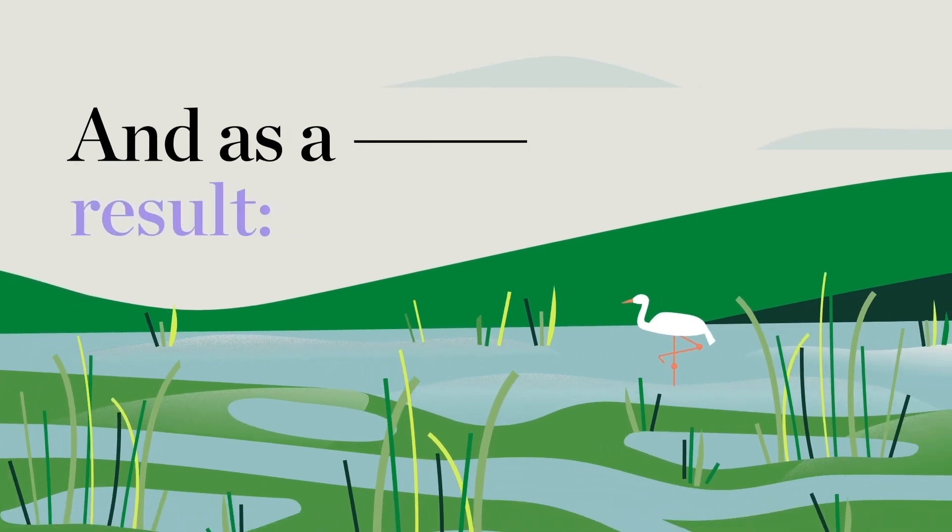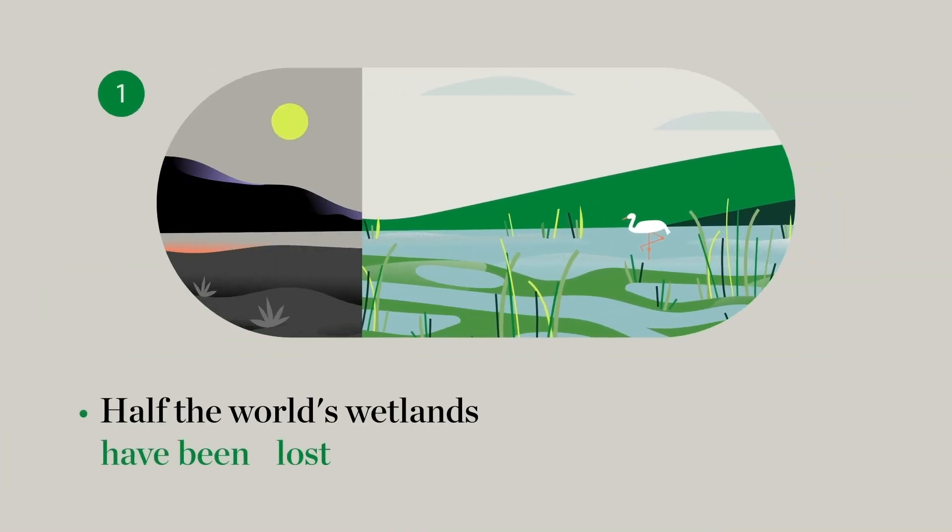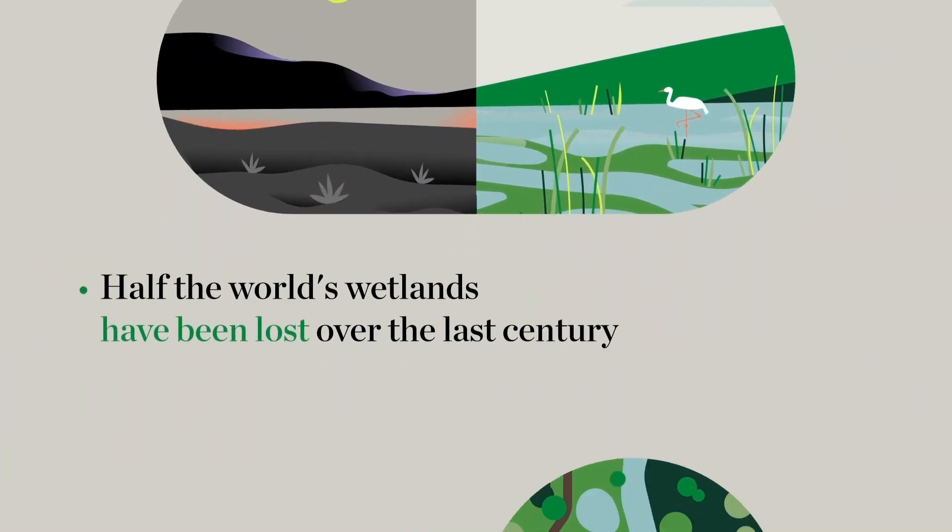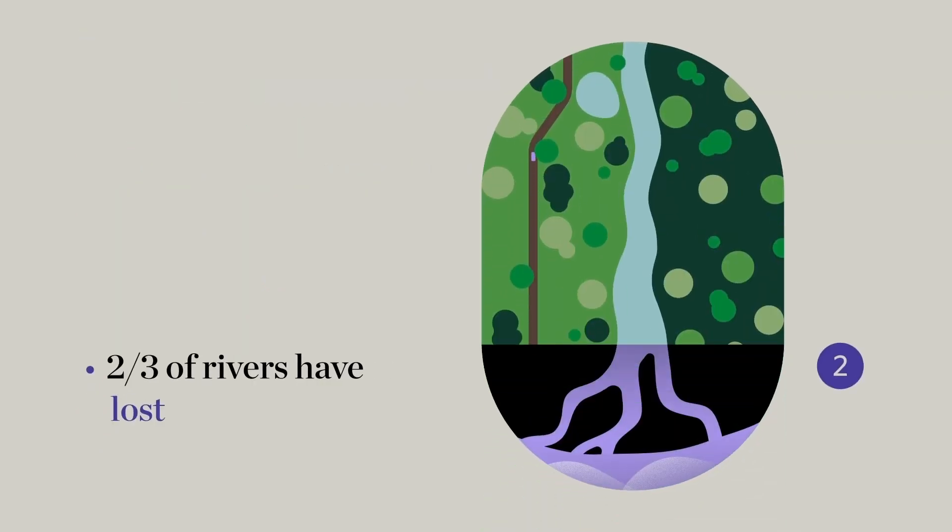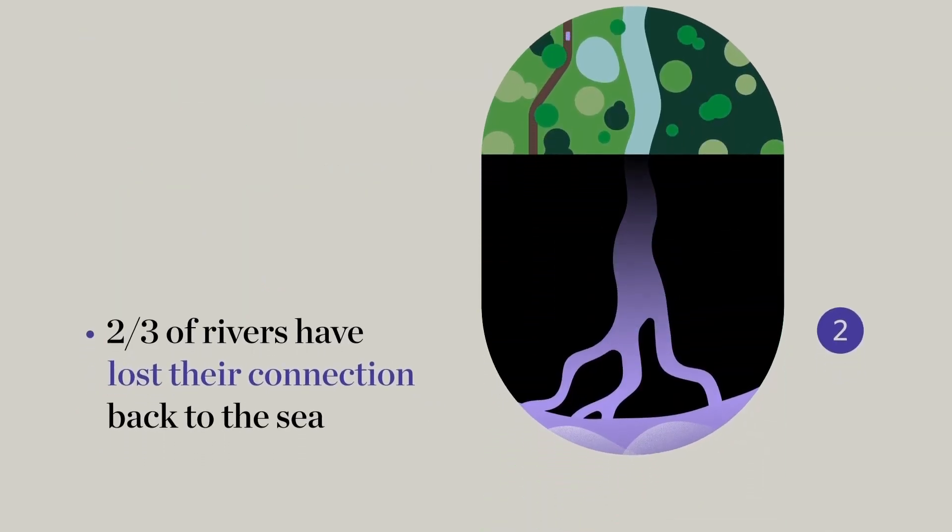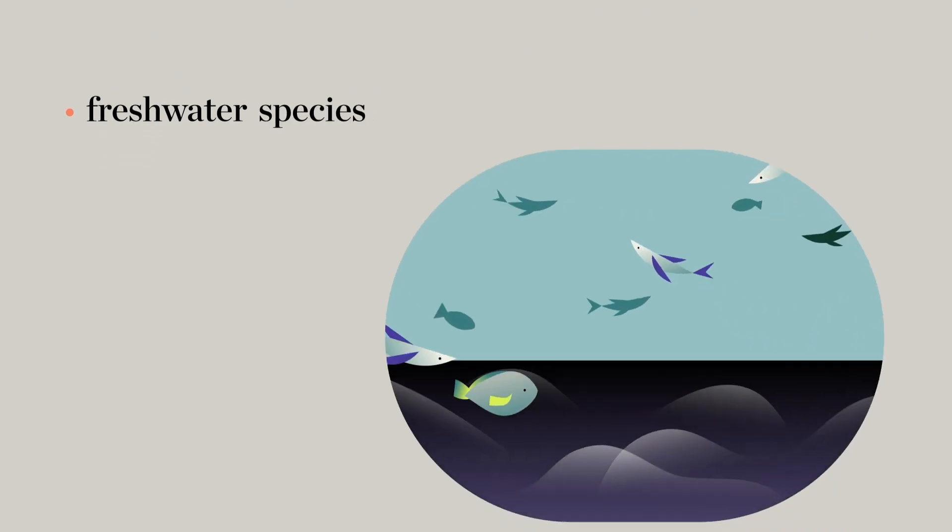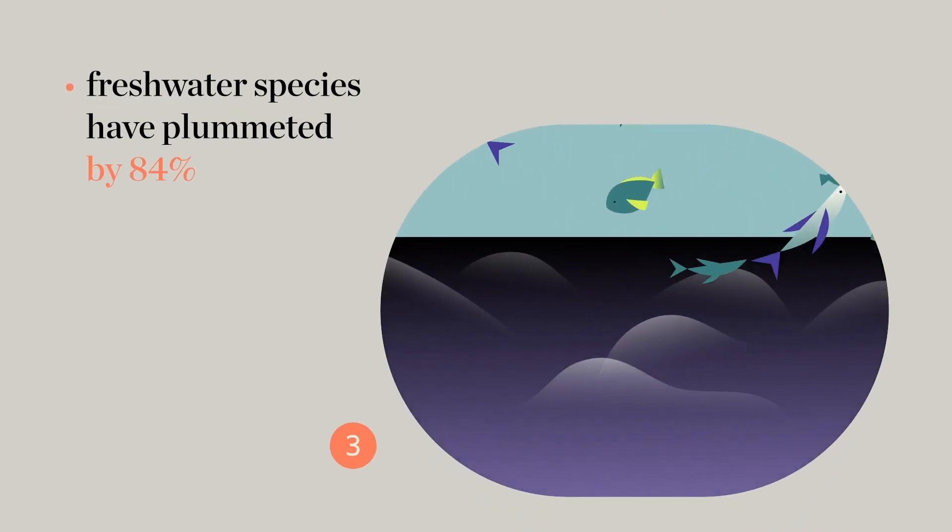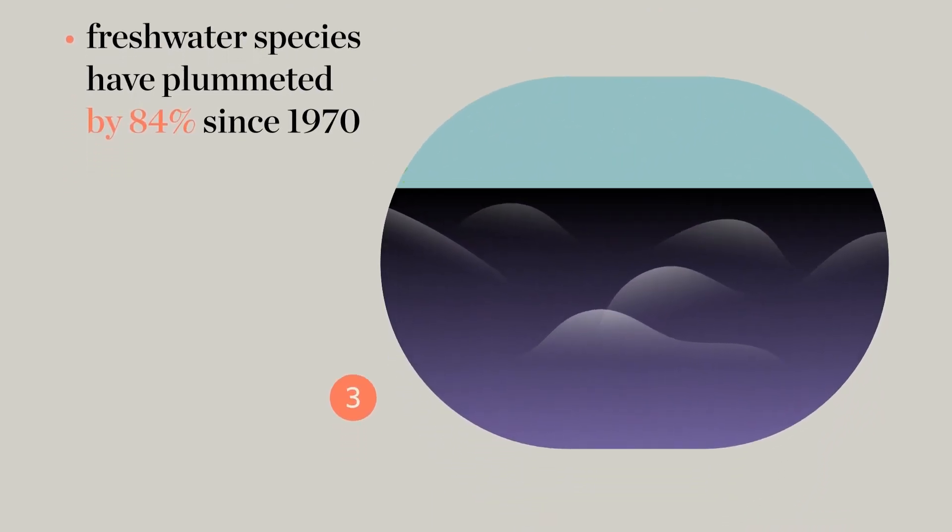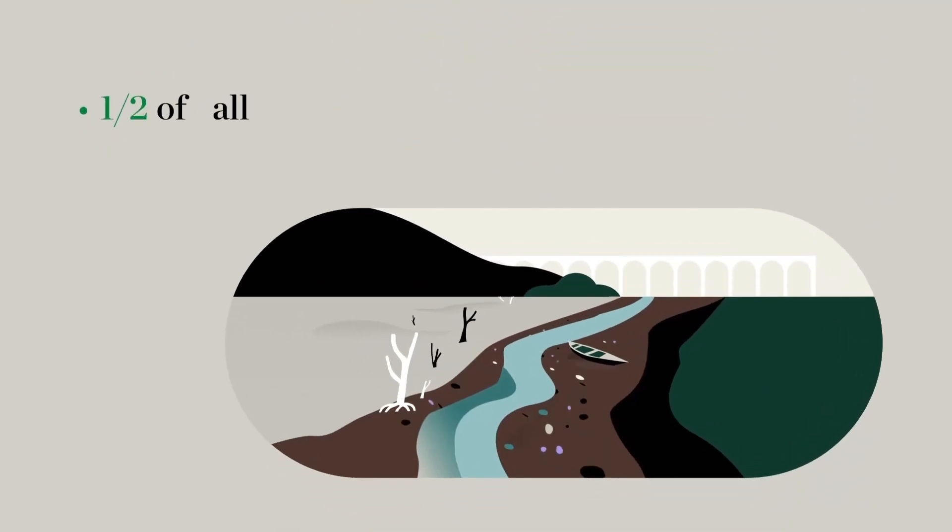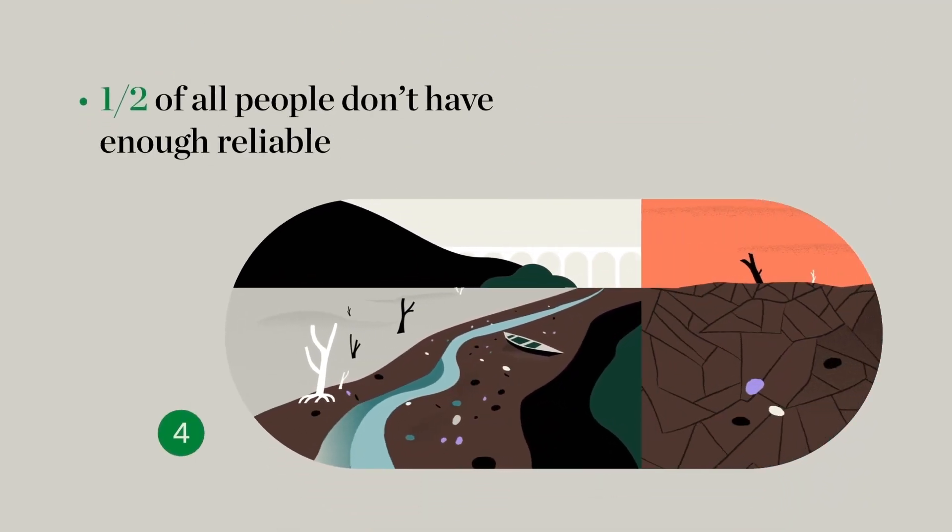And as a result, half the world's wetlands have been lost over the last century. Two-thirds of rivers have lost their connection back to the sea. Freshwater species have plummeted by 84% since 1970. And already half of all people don't have enough reliable drinking water.